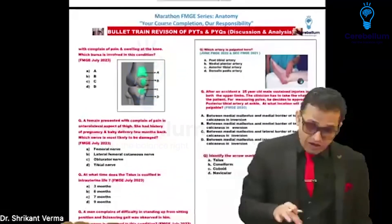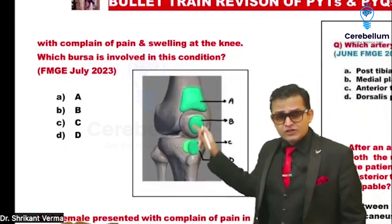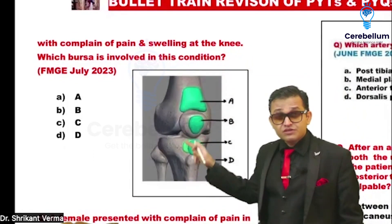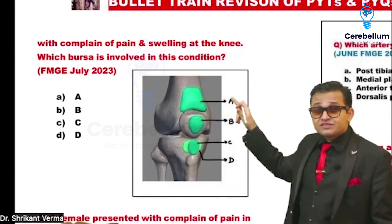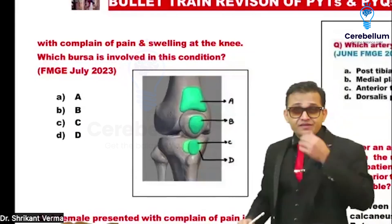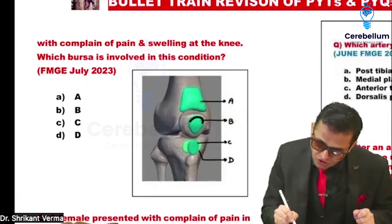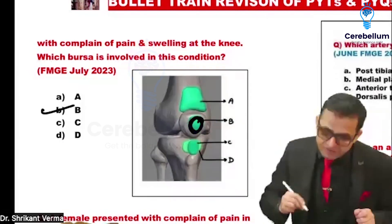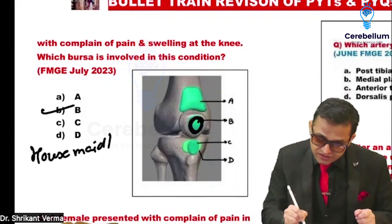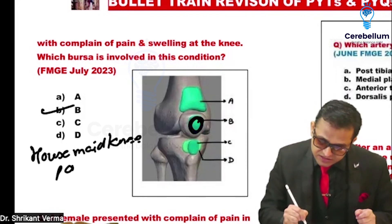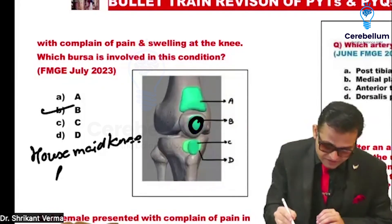After the completion of the upper limb part, the lower limb will be very easy. The bursa question — a patient with complaint of pain and swelling at the knee: which bursa is involved? There was the housemaid's knee, so the bursa in front of the patella — pre-patellar bursitis, which is also known as housemaid's knee. This is pre-patellar bursitis.